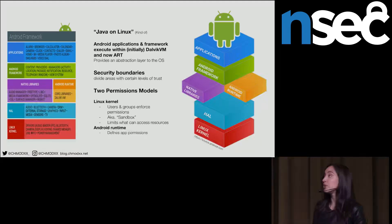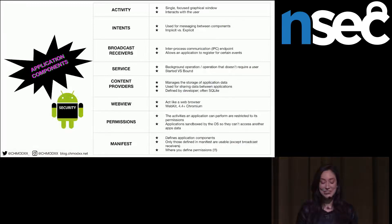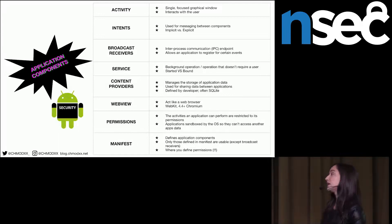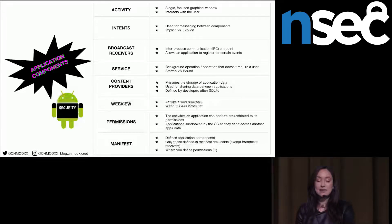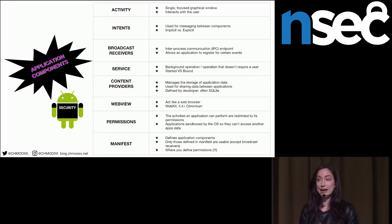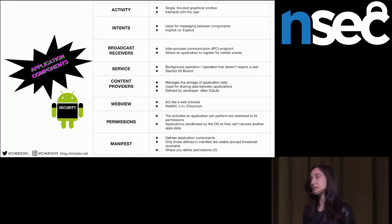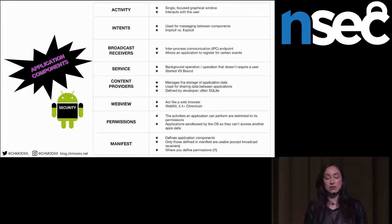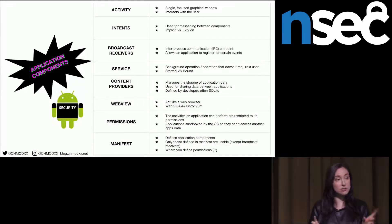Let's talk briefly about application components. An activity is a single-focused graphical interface — basically what you're interacting with as the user. Intents are used for messaging between components. You have implicit intents and explicit intents. This is going to become very important in our discussion later because there are a lot of vulnerabilities around these two different types of intents.